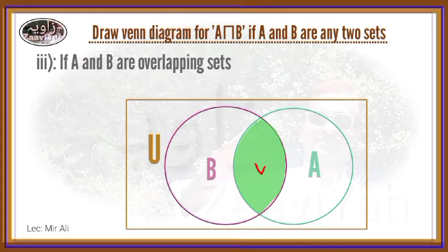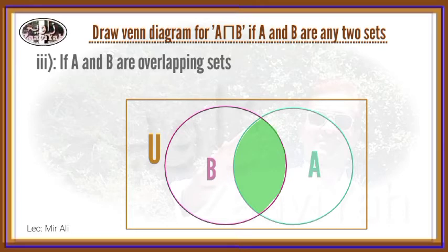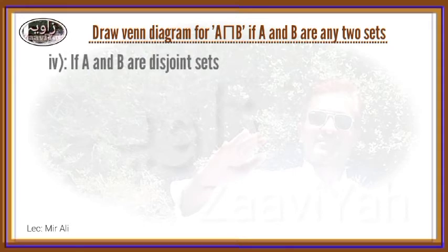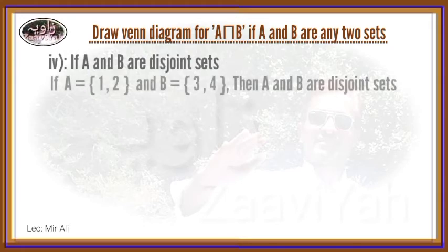The common elements will be represented in the shared region, that is the shared region of A-Intersection-B. When sets A and B are disjoint — no common elements exist — A-Intersection-B is represented in this Venn Diagram.